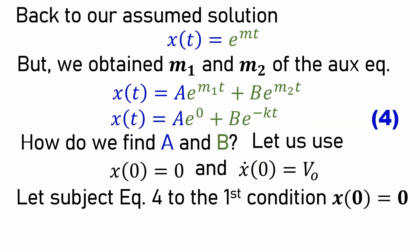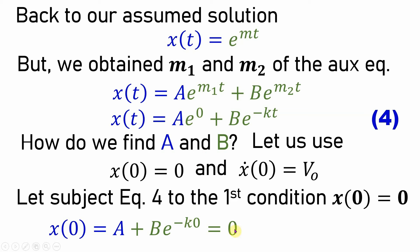Let's apply the first condition: x(0) = 0. When t = 0, substituting into our equation gives A·e^(0) + B·e^(−k·0) = 0, which means A + B = 0, so A = −B.